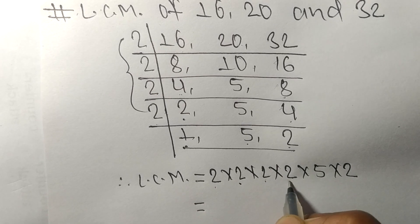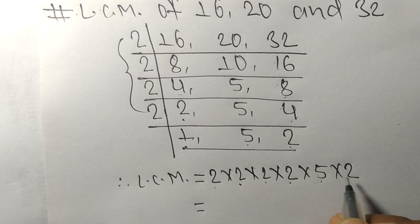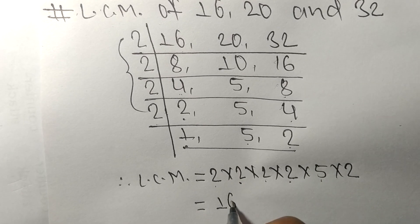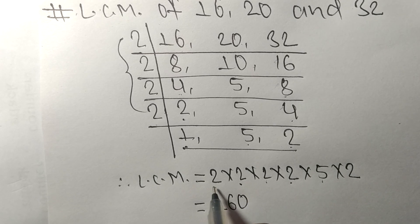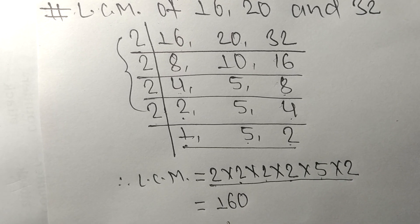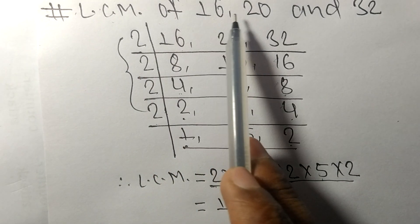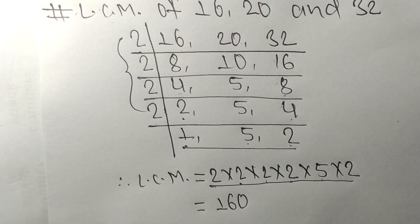So 5 and 2. 2 times 2 means 4, 4 times 2 means 8, 8 times 2 means 16, 16 times 5 equals 80, 80 times 2 equals 160. So by multiplying all these numbers we got 160. So 160 is the LCM of 16, 20, and 32.